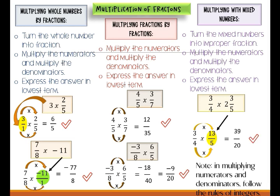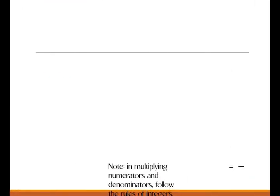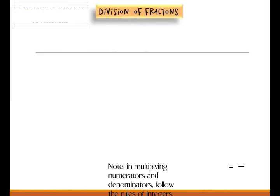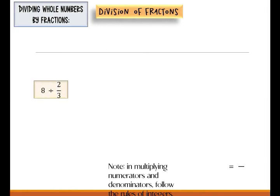Take note that in multiplying numerators and denominators, follow the rules of integers. Next is division of fractions. First we will divide whole numbers by fractions — for example, 8 divided by 2 over 3. The first step is to turn the whole number into a fraction, so 8 will become 8 over 1, divided by 2 over 3.